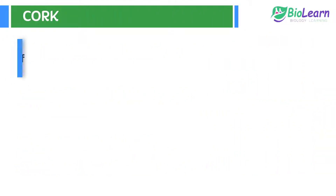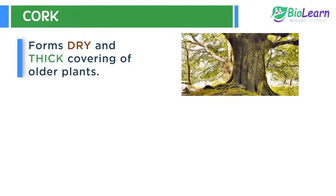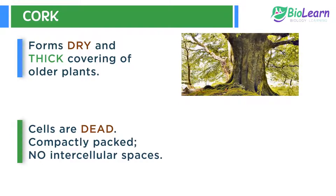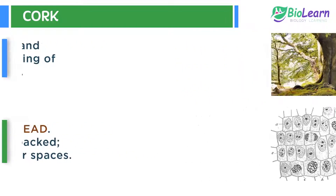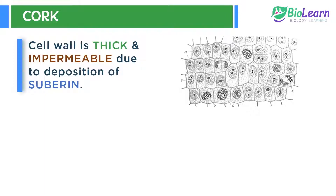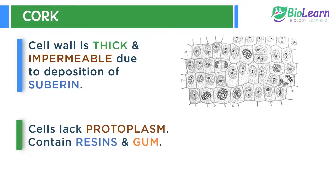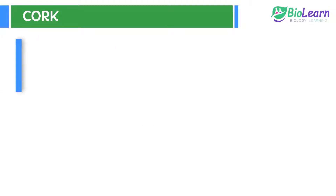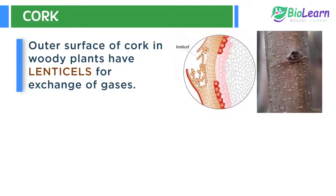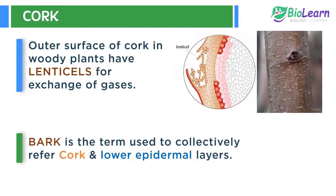Cork tissue forms the dry and thick covering of older plants. Cells of the cork are dead and compactly arranged without any intercellular spaces. The cell wall is thick and impermeable to water and gases because of the deposition of suberin. The cells are devoid of protoplasm and contain resins and gum. The outer surface of the cork in woody plants has small pores called lenticels to allow the exchange of gases. Bark is the non-technical term used collectively for cork and the lower epidermal layers.